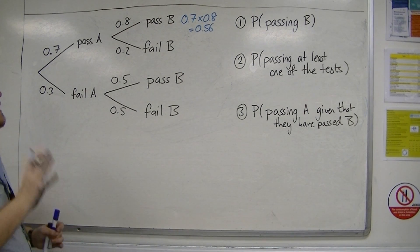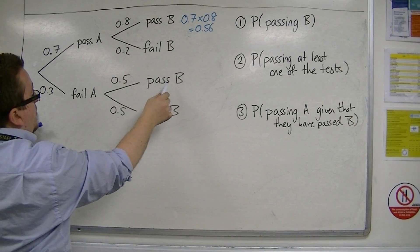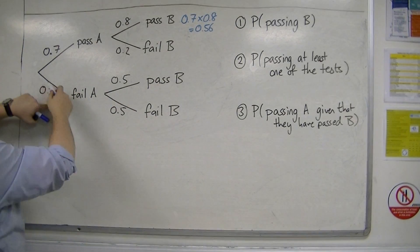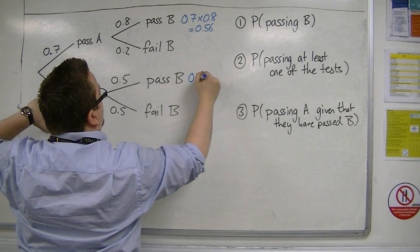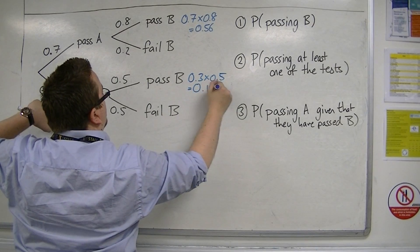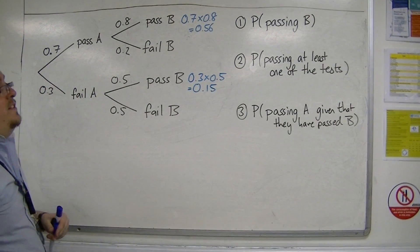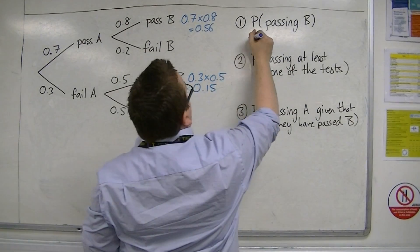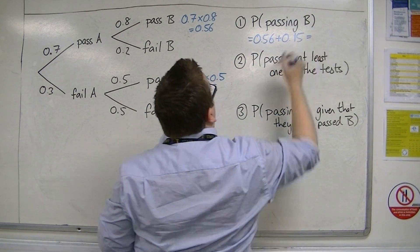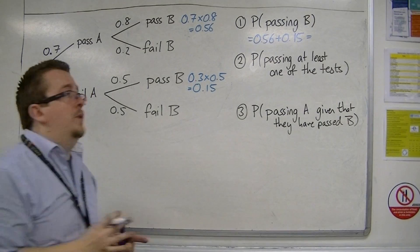However, he could also pass B if he fails A and then passes B. That would be 0.3 times 0.5, which is 0.15. So the probability of passing B is 0.56 plus 0.15, which equals 0.71.